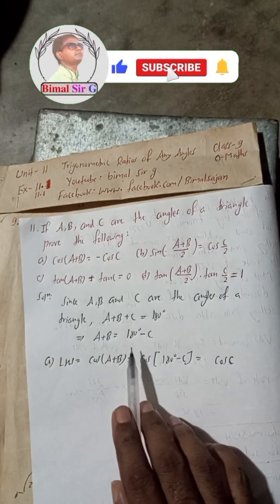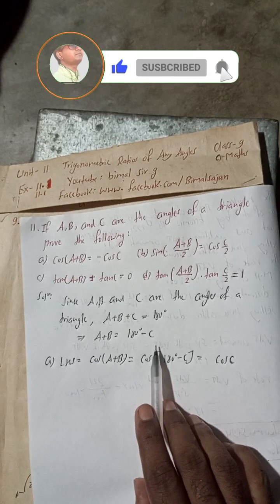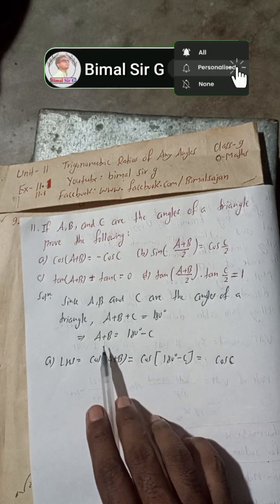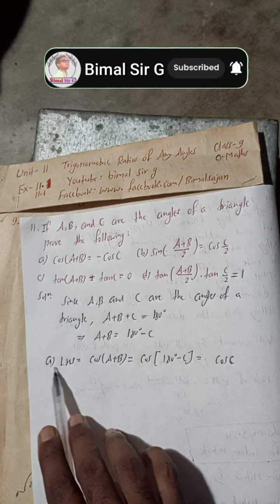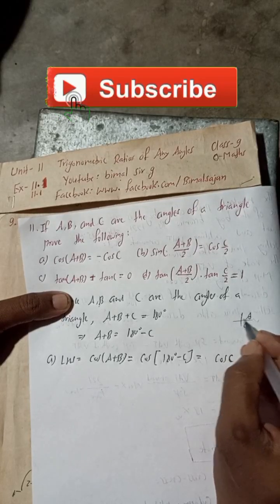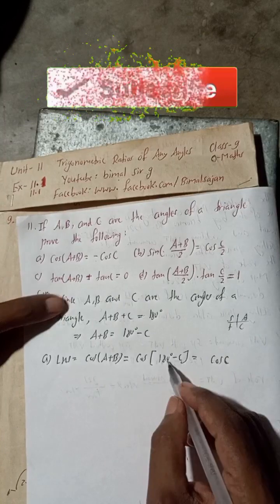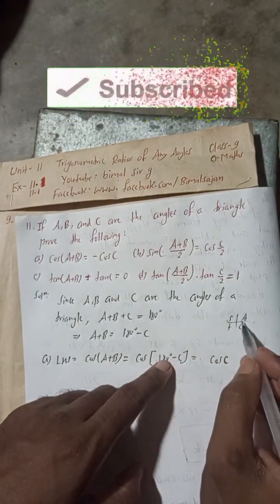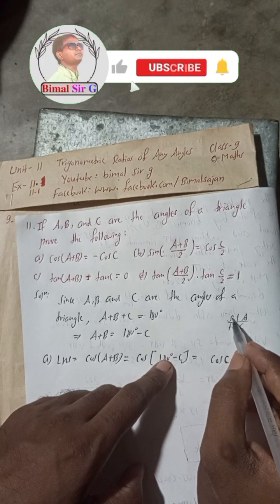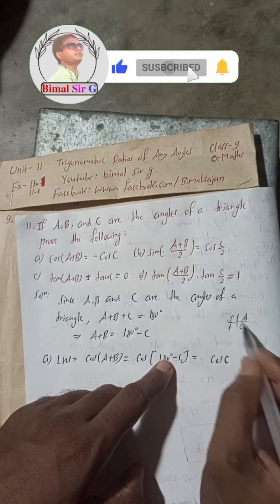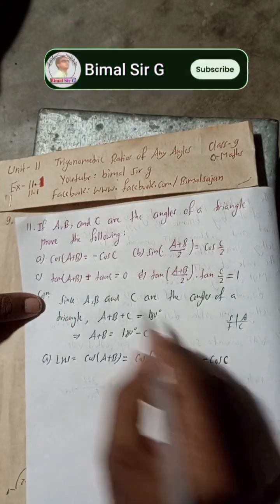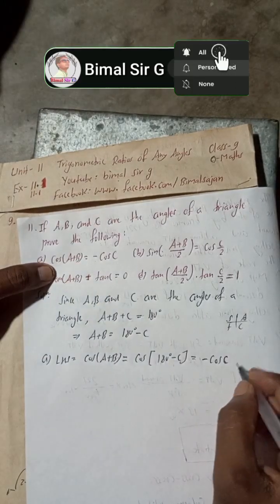Welcome back — the video had stopped due to some reasons, so I will edit and add this here. The CAST rule tells about the sign. 180 minus θ falls in the second quadrant. In the second quadrant, only sine and cosec are positive, so cos is negative. Therefore cos(180° − C) equals minus cos C. So LHS equals minus cos C, which equals RHS. Proved.